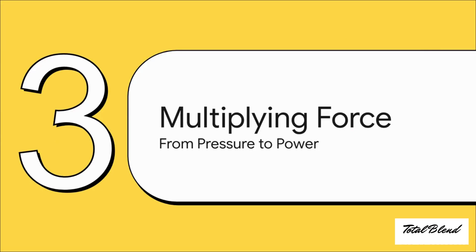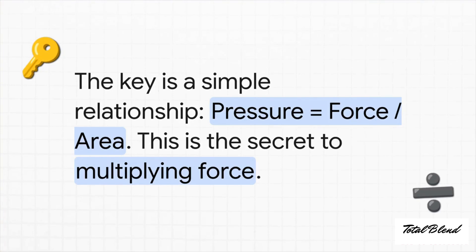Okay, so if the pressure is the same everywhere, how in the world do we get from that to multiplying force? This is where the real aha moment happens, and it all boils down to a super simple relationship between pressure, force, and area. And here it is. That's the whole secret. Pressure is just the amount of force you apply divided by the area you're applying it to. This one little equation is the key to our entire puzzle. Because if pressure has to stay the same everywhere in the liquid, but we can play around with the force and the area, we can do some amazing things.